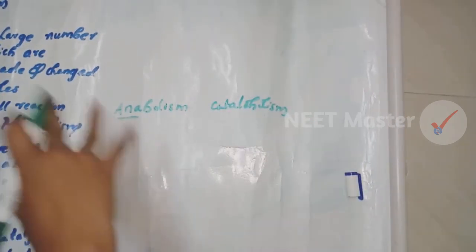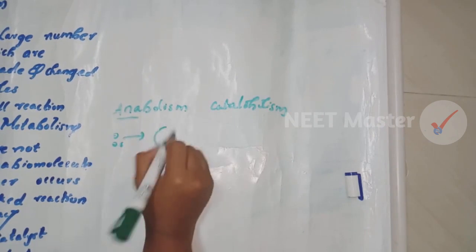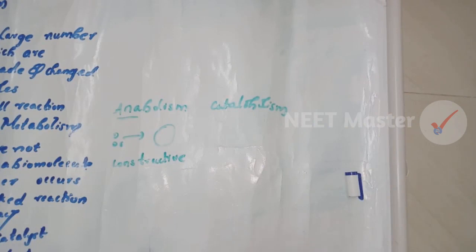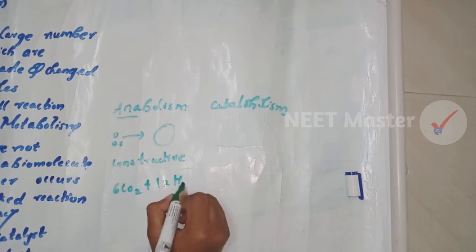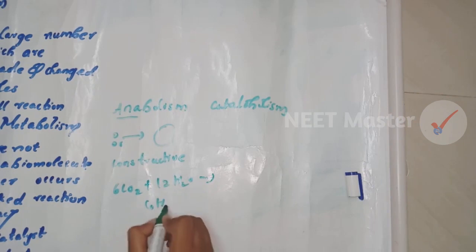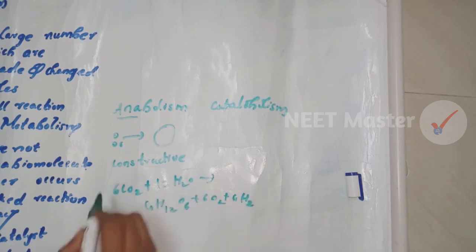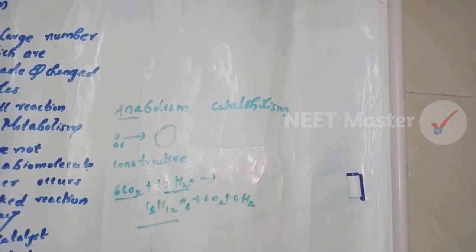Anabolism is a constructive process — a building process that assembles small pieces into larger molecules. A typical example is photosynthesis: 6CO₂ + 12H₂O, in the presence of sunlight, produces C₆H₁₂O₆ (glucose) and oxygen. Carbon dioxide and water are used to synthesize glucose molecules. This is a constructive, anabolic process.